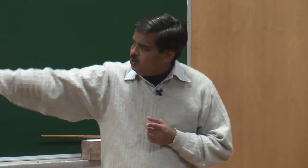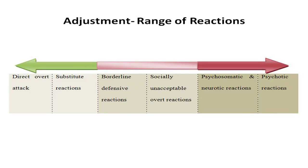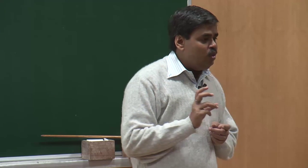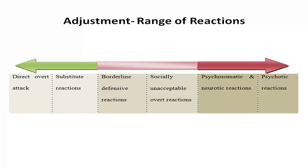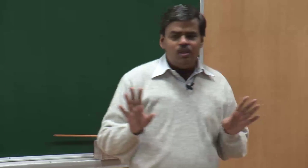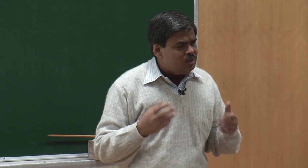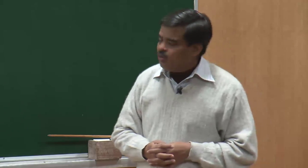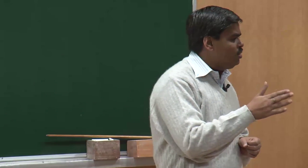The way we would look at it is: we will first begin with the extreme possibility of the direct overt attack. You have a problem at hand — you are a woman who has not been able to conceive. What could be the direct overt attack for this problem? Once we discuss that, we will come to the second set of reactions — substitute reactions. Then we come to borderline defense reactions. The first two are perfectly normal human reactions; the pink one is the borderline case, where you adopt one or the other type of defense mechanism, which helps you remain on the borderline of normality and abnormality.